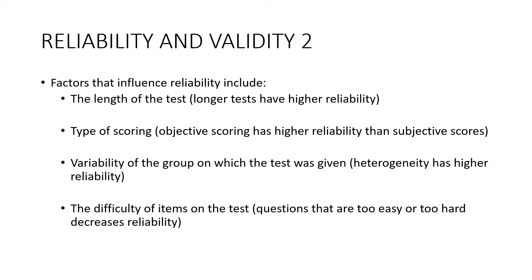The type of scoring also matters. Objective scoring has higher reliability than subjective scoring. A math test with a specific answer like 4.3 is objective — either right or wrong. Subjective scoring, like an inkblot test, is opinion-based: most people might say a shape looks like a bat, but you say it looks like a horse. That inconsistency is inherent in subjective scoring. The variability of the norming group also matters — a heterogeneous group produces higher reliability than a homogeneous one.